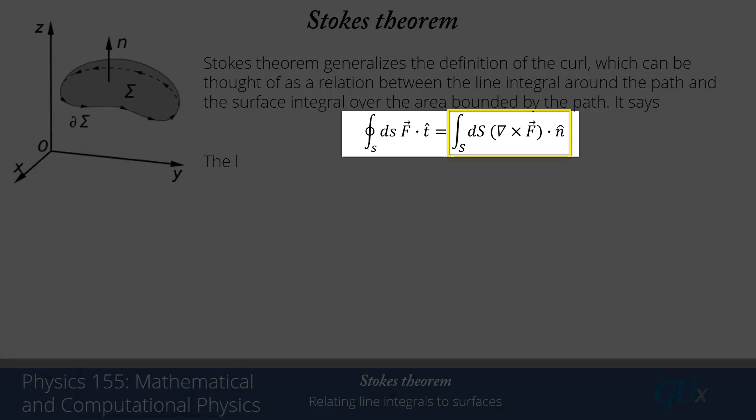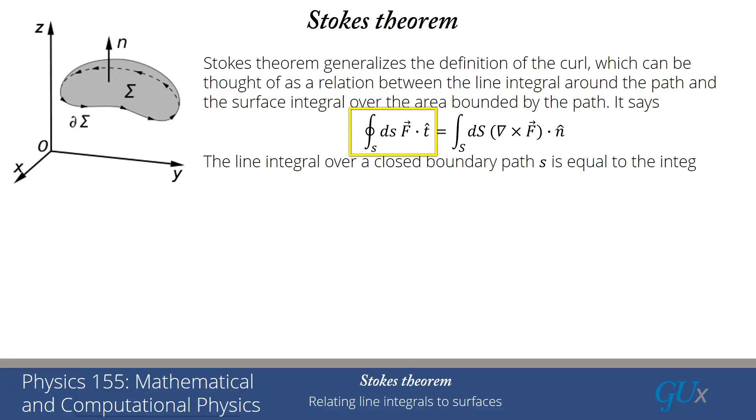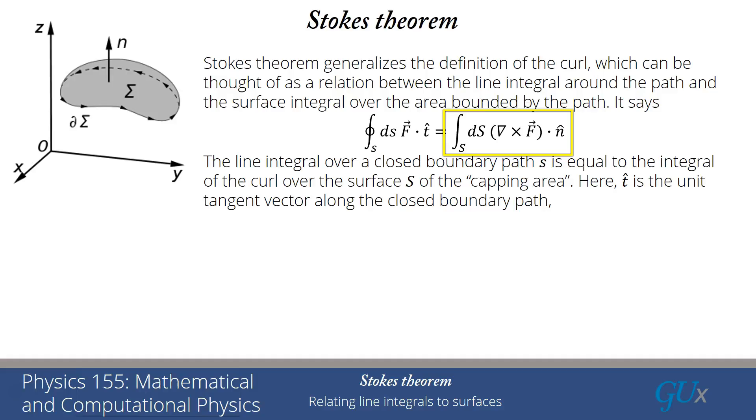We have this line integral over a closed boundary denoted by lowercase s, and that's equal to the integral of the curl over the surface denoted by big S of the capping area. t hat is the unit tangent vector along the closed boundary path, and n hat is the unit normal vector to the surface.